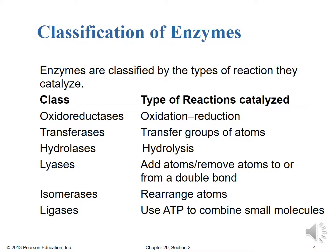Isomerases rearrange atoms. We know what isomers are so that makes sense. And then ligases use ATP to combine small molecules. So those are major classes and the types of reactions that those classes of enzymes catalyze.